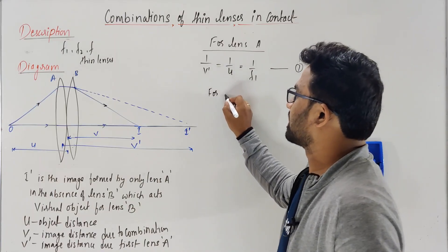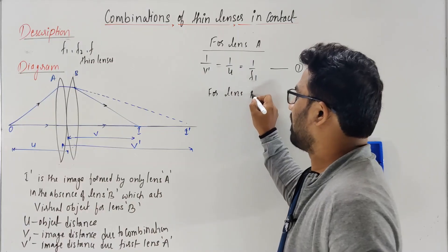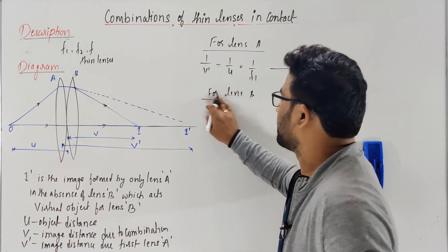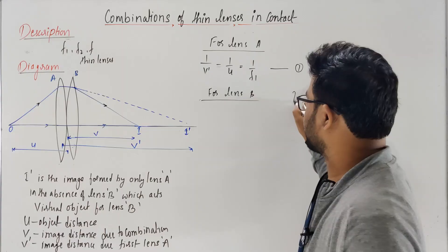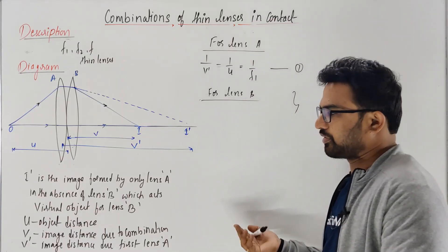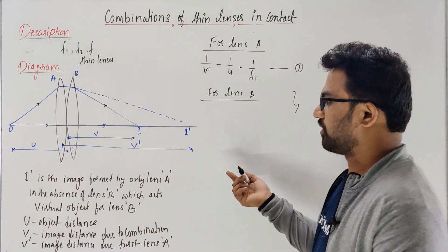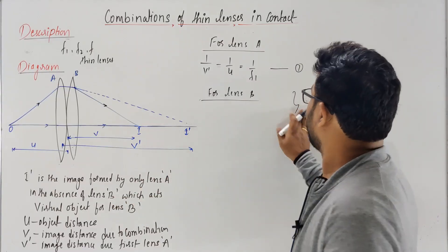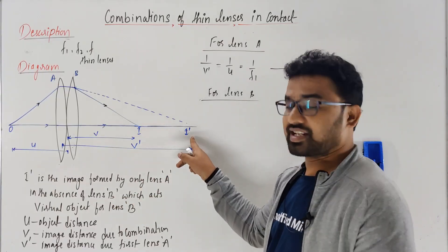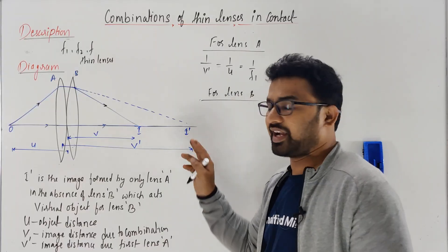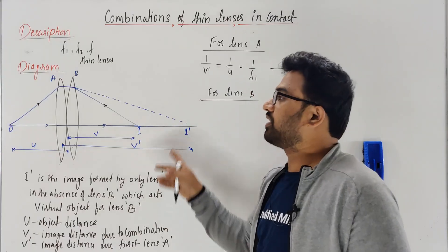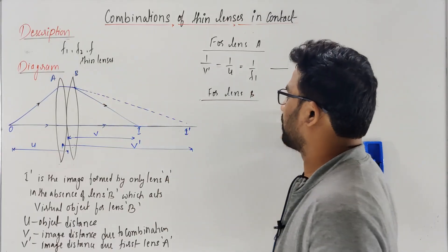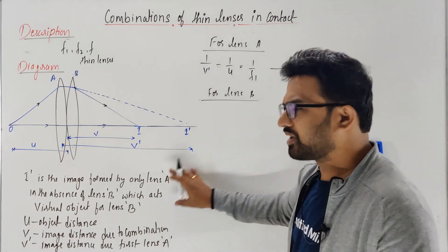For lens B, I' is the image formed by only lens A. I' acts like a virtual object - it's a real image only, but it acts like a virtual object for the second lens.